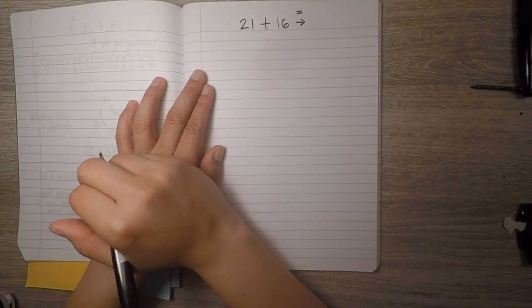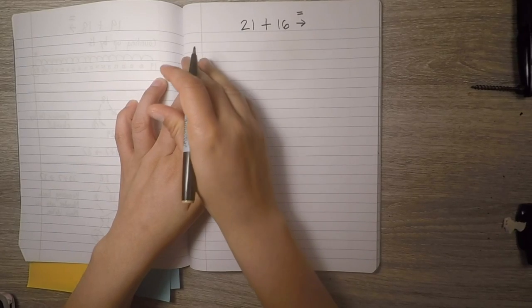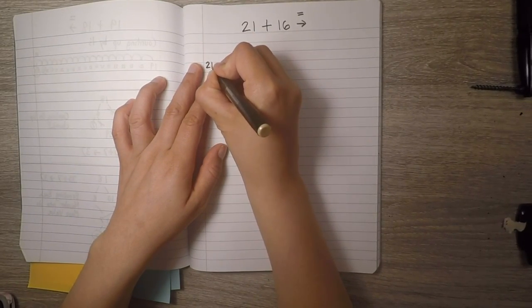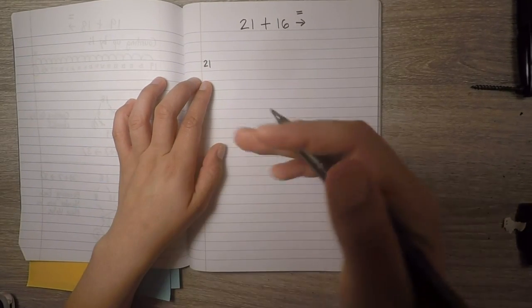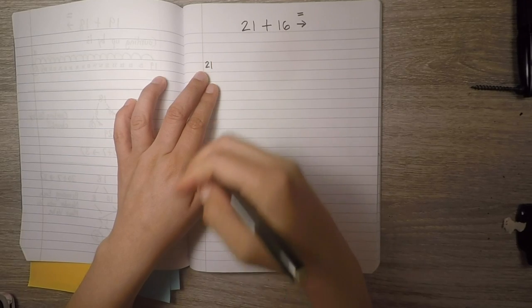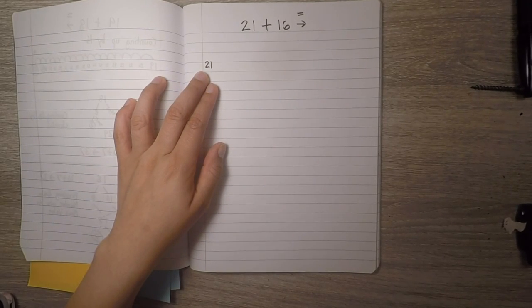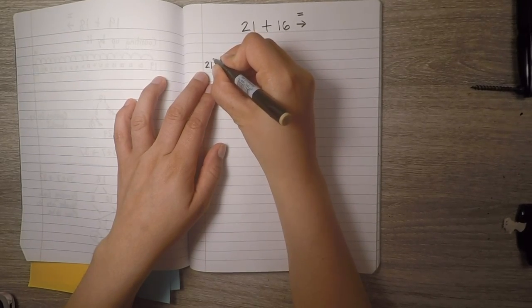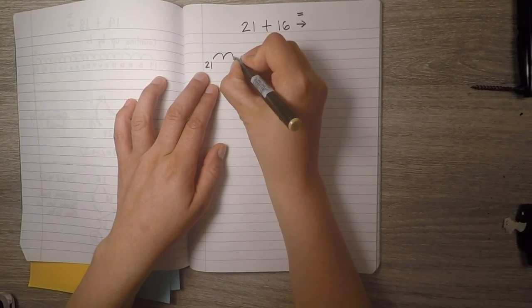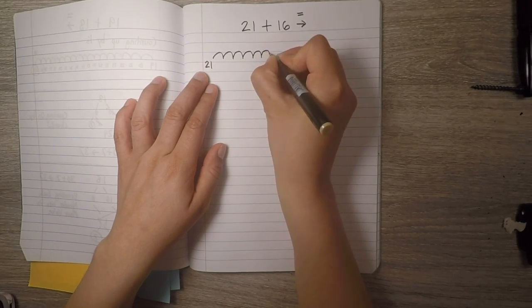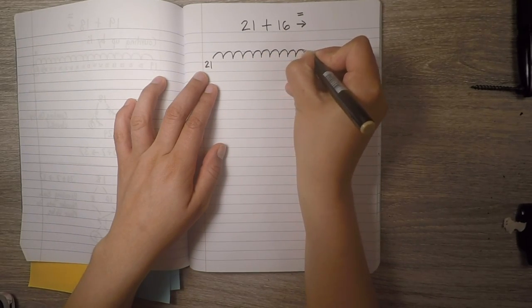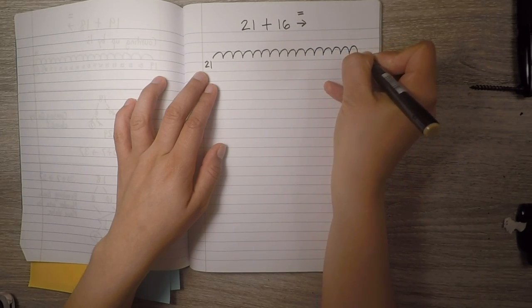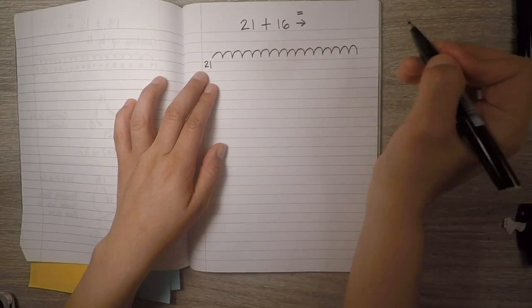Well, to start off, I think just like yesterday, probably a lot of you tried to do the first strategy that we did together, where we started by putting 21 in our heads and then counting up 16 more. So I'm thinking some of you either did this in your head or showed it on paper, and to represent it and record it, it would look like this. 1, 2, 3, 4, 5, 6, 7, 8, 9, 10, 11, 12, 13, 14, 15, 16. And I'm stopping right there because I'm adding only 16 more.